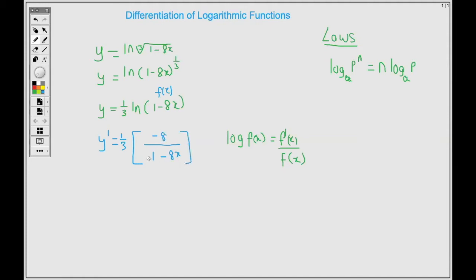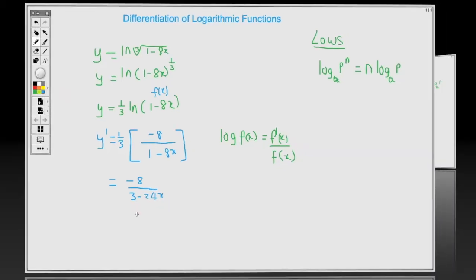Now this is the derivative, but we can go further by multiplying through by 1 third. So we have 1 times negative 8, that's minus 8. Then 3 times 1, that's 3 in the denominator. Then 3 times minus 8x, that's minus 24x in the denominator. And all of this represents the derivative.